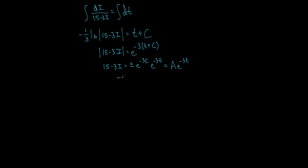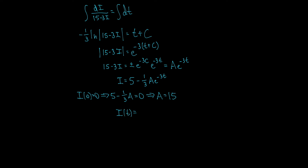Solving for i: i equals 5 minus one-third a times e to the negative 3t. Now applying the initial value i(0) = 0: plugging in t = 0 gives 5 minus one-third a equals 0, since e to the 0 is 1. Solving, a = 15. So our equation becomes i(t) equals 5 minus 5e to the negative 3t. That's the solution to our initial value problem.